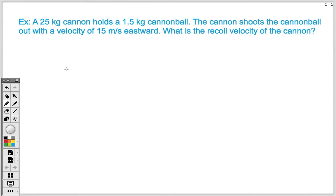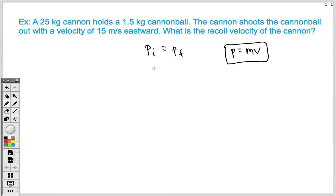Because this is a conservation of momentum problem, we have the understanding that the total initial momentum is equal to the total final momentum. We express this mathematically as: initial momentum equals final momentum. The lower case p designates momentum, and we know that the momentum equation looks like this: p equals mass times velocity. We're going to need to figure out the momentum of the cannon and the cannonball beforehand, and then the mass and velocity of each object afterwards.